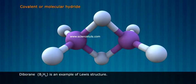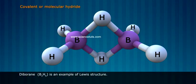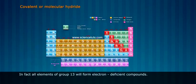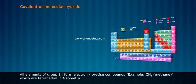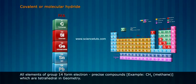Diborane (B₂H₆) is an example of electron deficient compounds. In fact, all elements of group 13 form electron deficient compounds. All elements of group 14 form electron precise compounds.